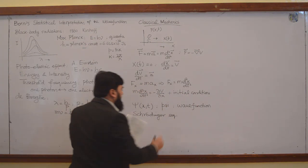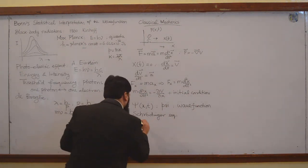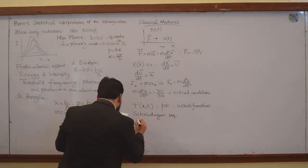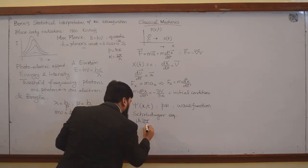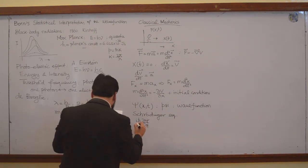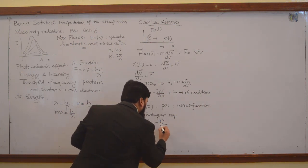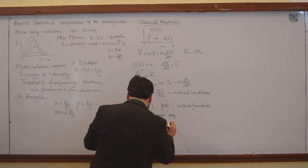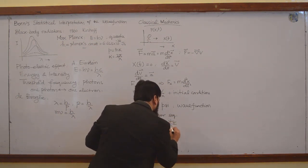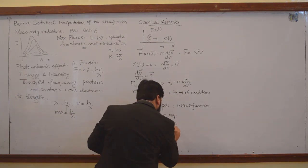The Schrödinger equation is written as: i h-bar times the partial derivative of psi over partial t, equals minus h-bar squared over 2m times the partial second derivative of psi over partial x squared, plus V times psi.